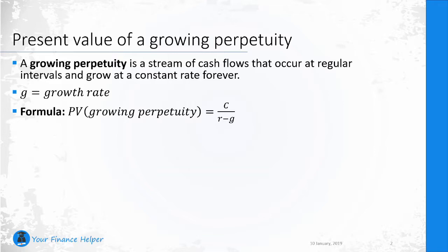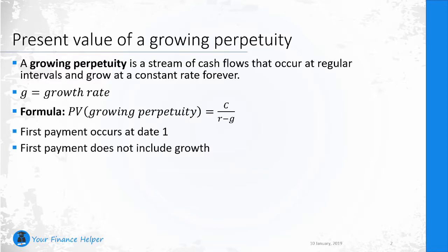An example of what the growth rate could be is an increase in the cash flow. For instance, you might assume that you invest a hundred dollars and that investment would increase by two percent every year. There are some assumptions we take, the same as for a standard perpetuity: the first payment occurs at day one, and the first payment does not include growth.